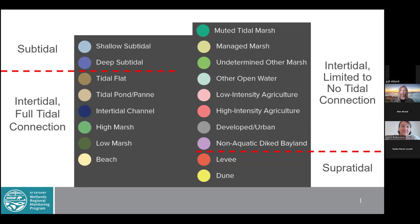We have created these categories: subtidal classes, intertidal with full tidal connection, and intertidal with limited to no tidal connection. You can see the muted tidal marsh in the top right, which is in that subcategory of limited to no tidal connection. 'Muted' describes when the tidal amplitude is dampened — typically by a culvert or something restricting tidal flow. We also have a few supertidal classes, including levees and dunes.